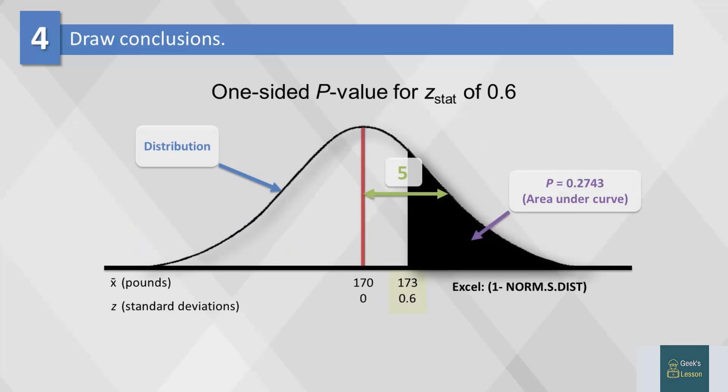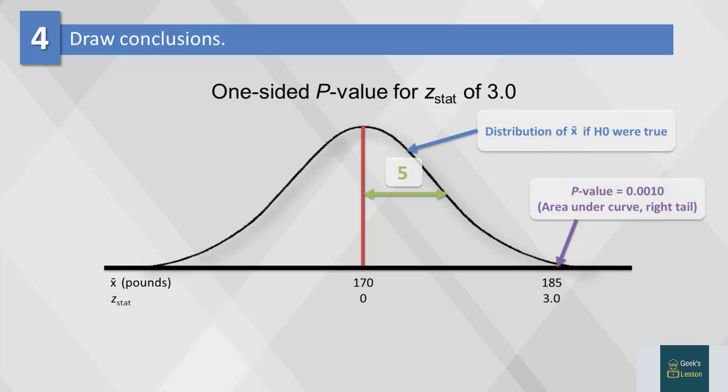In one sample with a sample mean of 173, the z-statistic was .60. If we had this sample, we would fail to reject the null hypothesis that the mean weights have increased over time. Likewise, if we computed the p-values for z equals 3.0, we would get .001, which means we have to reject the null hypothesis that the mean weight has remained the same over time.